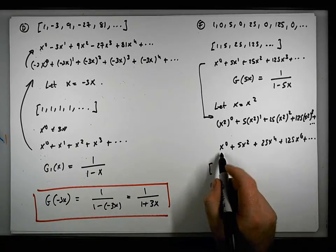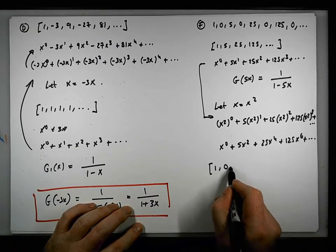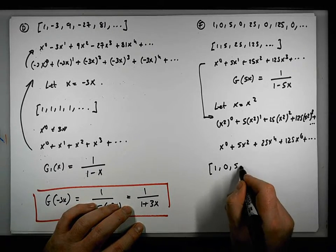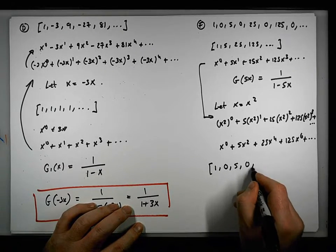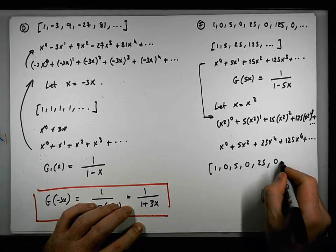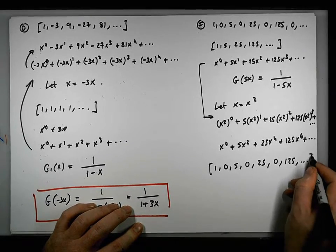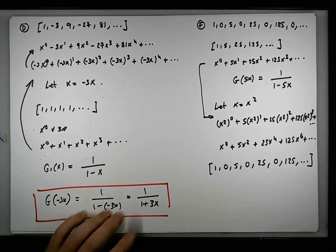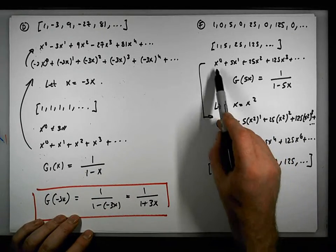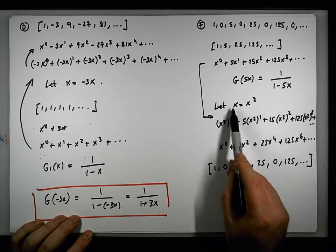This is encoding: 1, 0 (because there's no x to the 1), 5, 0 (there's no x to the 3), 25 (there's x to the 4), 0 (no x to the 5), 125x to the 6, and so on. So what we need to do is take the generating function and substitute in x squared for x.